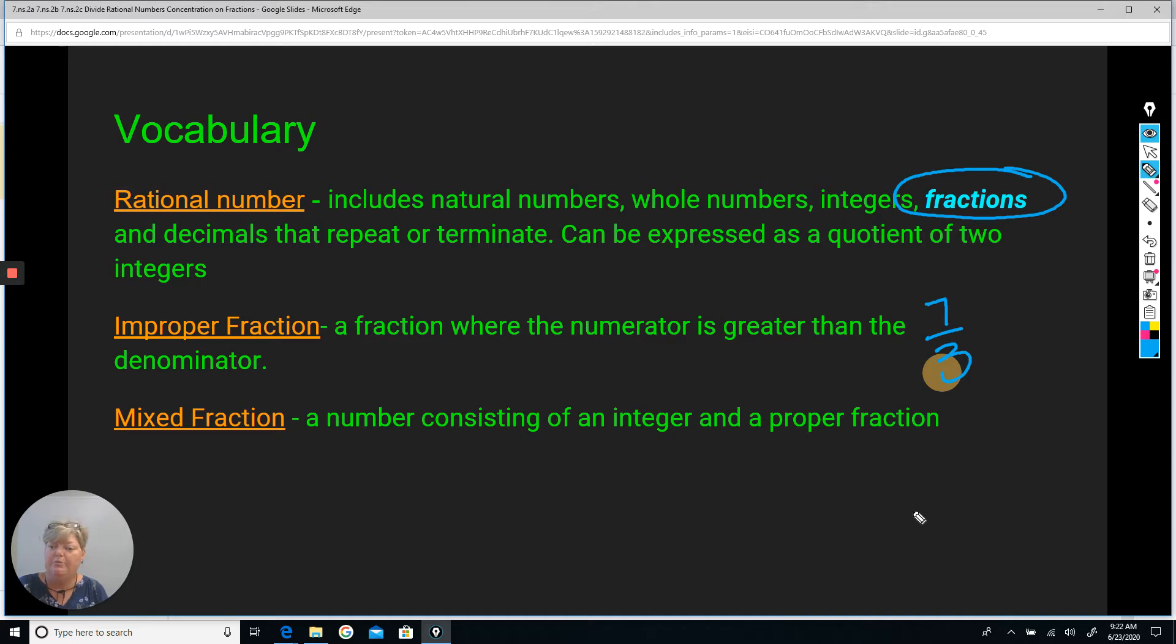Also in a mixed fraction, a number consisting of an integer and a proper fraction. So an example would be here is an integer, here is a fraction, and one-third would be a fraction.